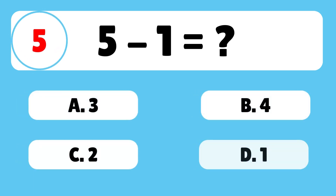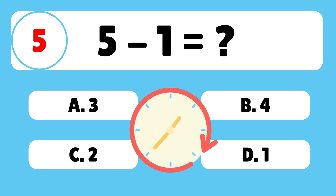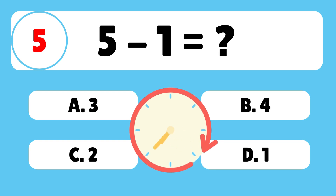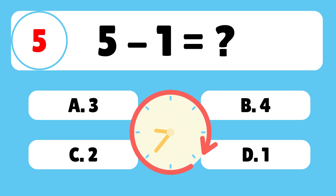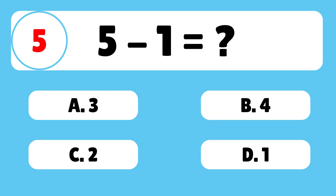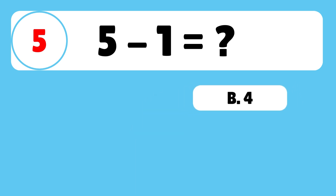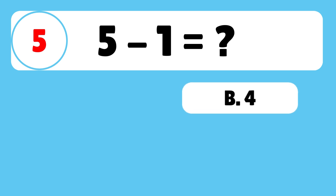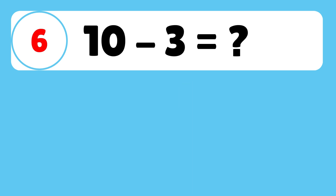Question 5: What is 5 minus 1? The answer is B. 5 minus 1 is equal to 4. Amazing!